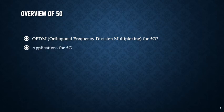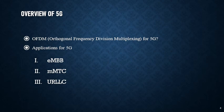5G networks should support three major families of applications. The first is eMBB — Enhanced Mobile Broadband — which will provide the greater capacity necessary to support peak data rates. The second is mMTC — Massive Machine Type Communication — a new service category for 5G that can support extremely high connection density of online devices. The third is URLLC — Ultra-Reliable Low Latency Communication — specified by 3GPP Release 15, used in factory automation, autonomous driving, smart grid, etc.